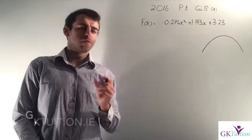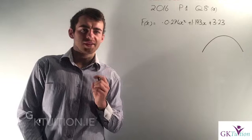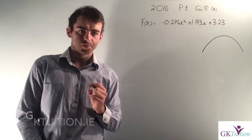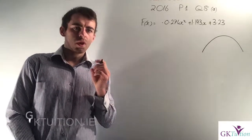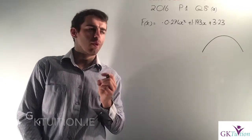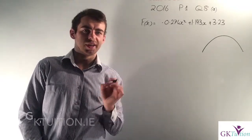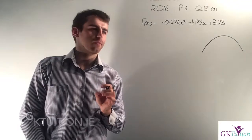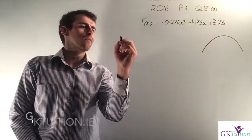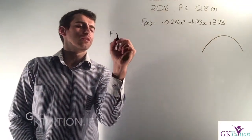In the first part of this question we're asked to find the maximum height reached by the centre of the ball. Straight away you should recognise that to find the maximum height — the maximum point — what you want to do is get the first derivative. So to find our maximum height the first thing we're going to do is get our first derivative.